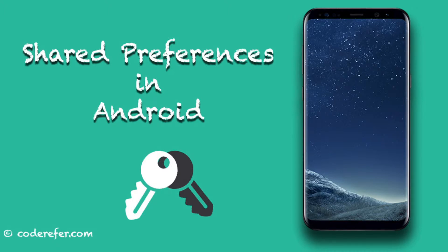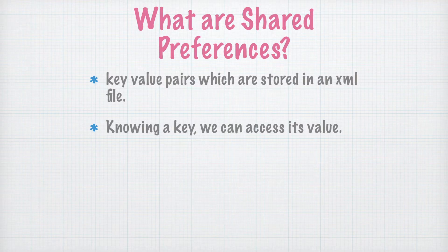Suppose a user enters data such as username and password — you need to store it somewhere so that whenever the user returns, they don't need to enter that username and password again. Or suppose you are playing a game and you want to store a score into a file — that's where we can use shared preferences.